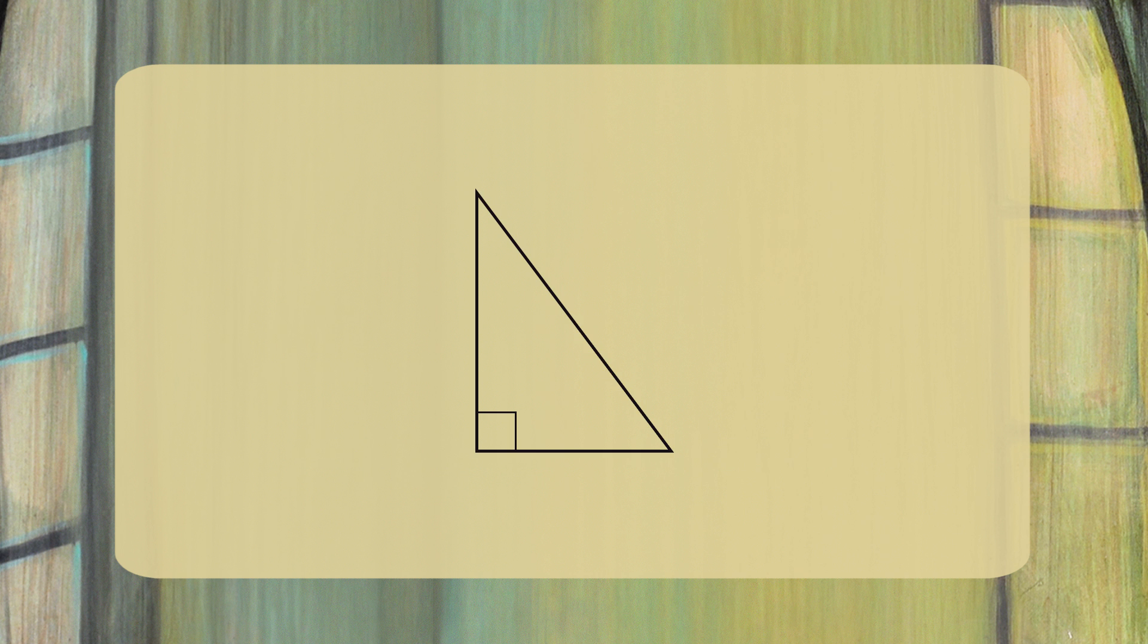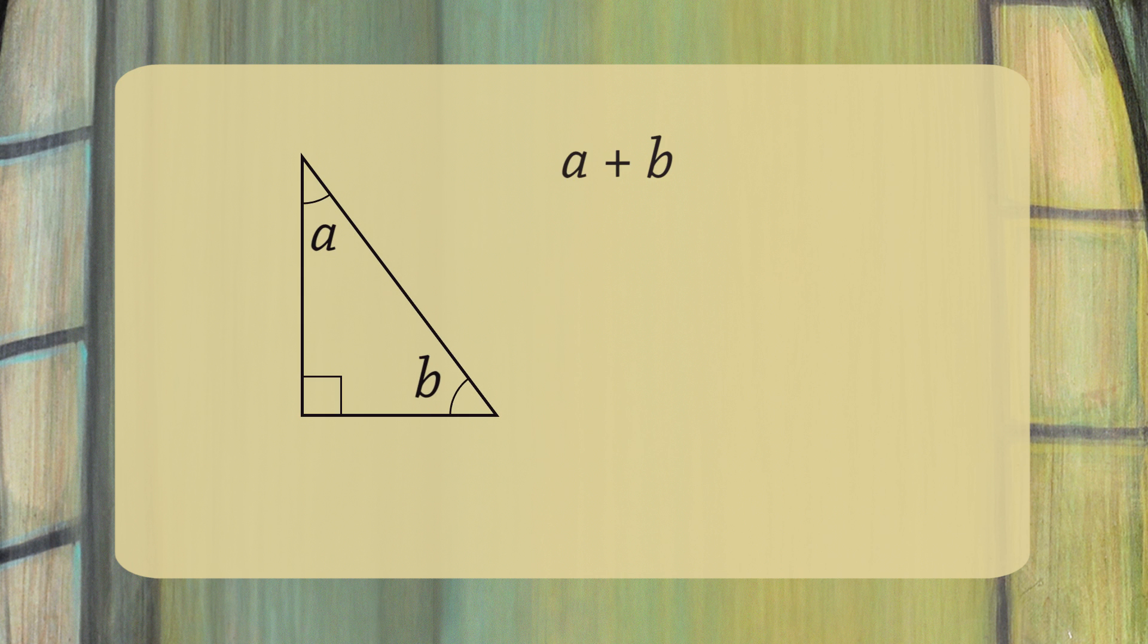Next, let's look at a right triangle. This angle measures 90 degrees. Let's call the other two angles A and B. Since the sum of the angles of any triangle equals 180 degrees, we have A plus B plus 90 degrees equals 180 degrees.